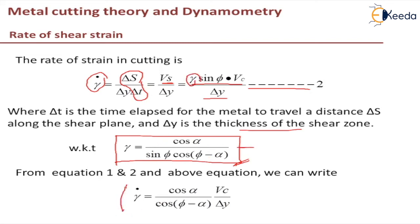So I will ending up equation for rate of shear strain as cos alpha by cos phi minus alpha into Vc by delta y. This is about rate of shear strain.